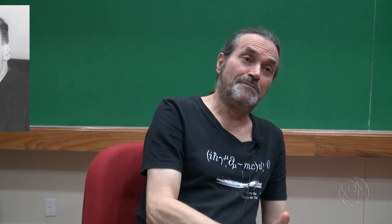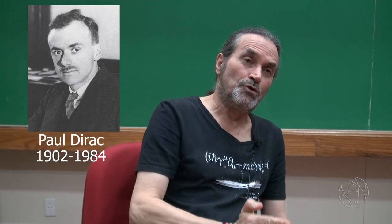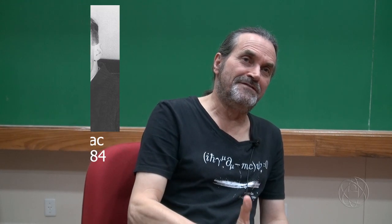Em 1928, mais precisamente, 2 de janeiro de 1928 e 2 de fevereiro de 1928, o físico britânico Paul Dirac publicou dois trabalhos fundamentais para a física atual, que foi a sua chamada equação de Dirac.